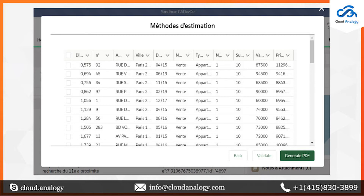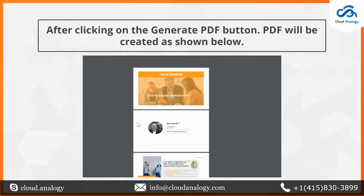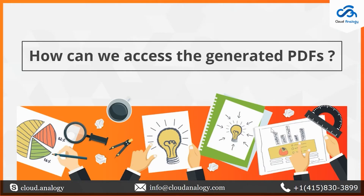Method Two also provides a Generate PDF button and a Validate button. If you don't want to select any property and click the Generate PDF button, it will show you all the data — whether there are 50 records or less than 50 in the database — in PDF format.